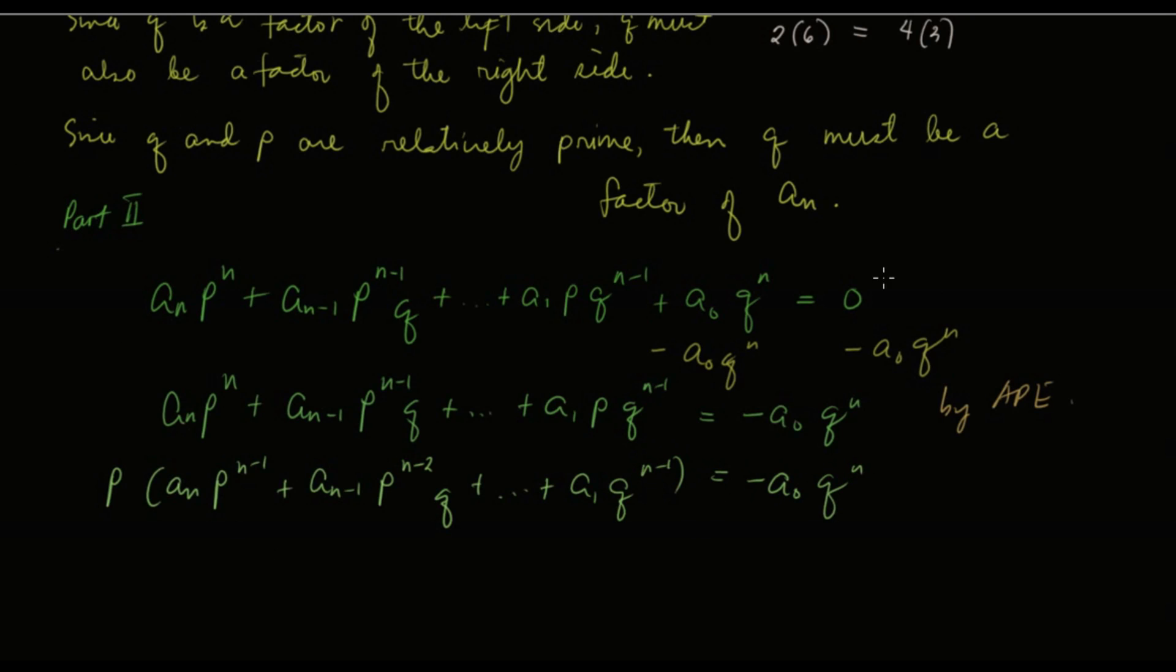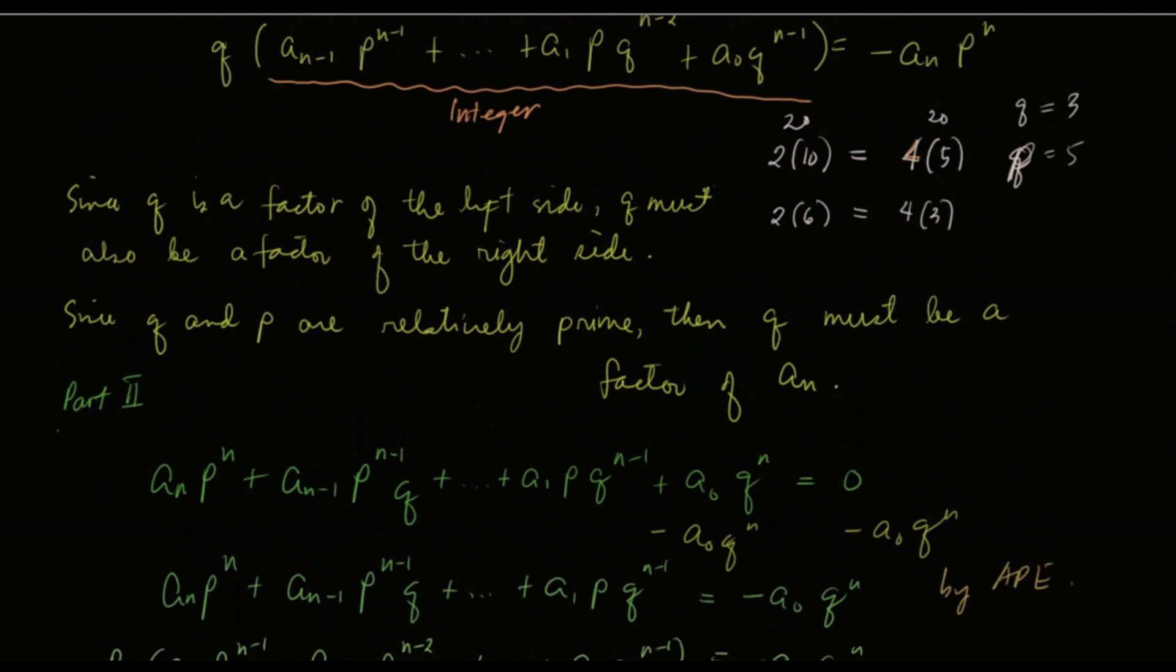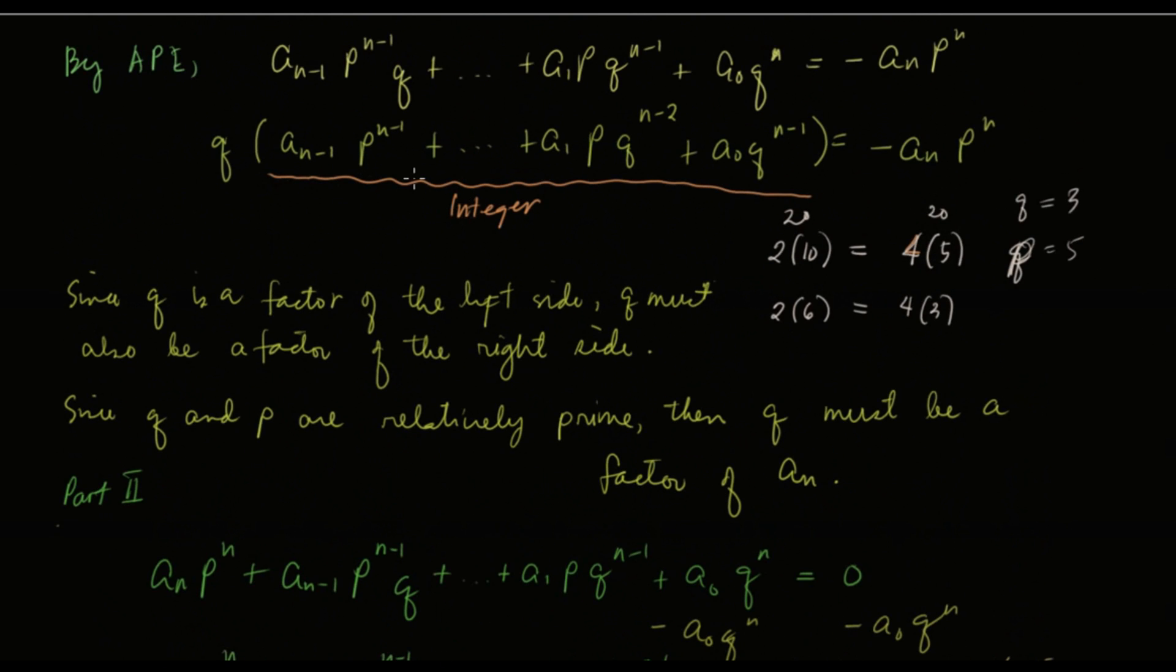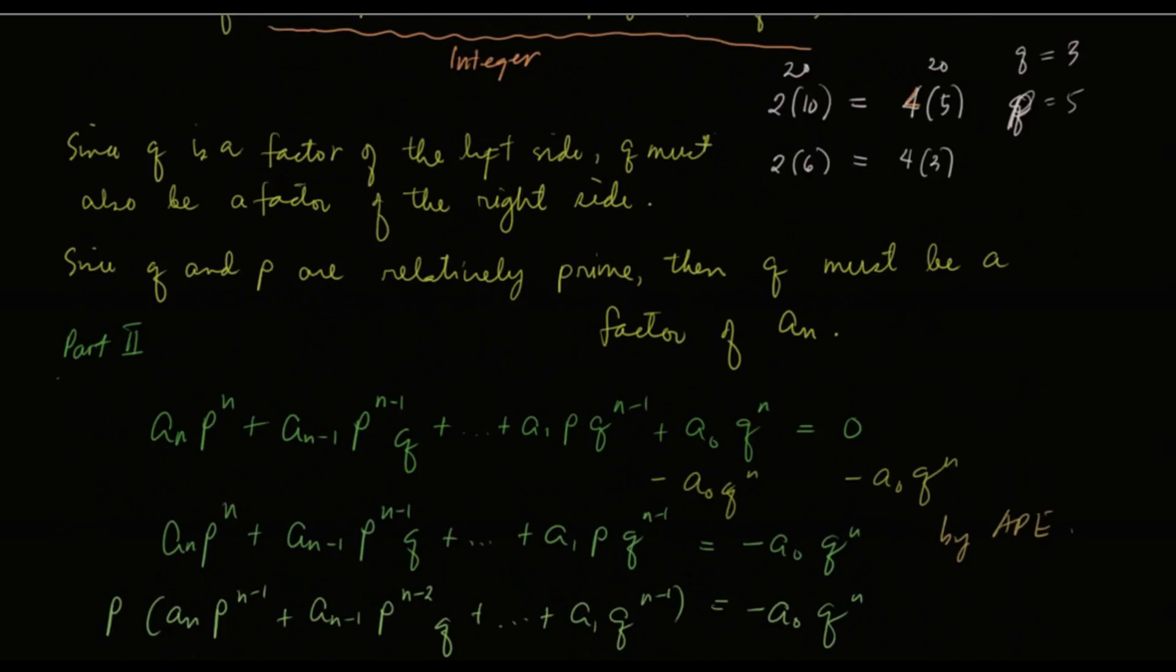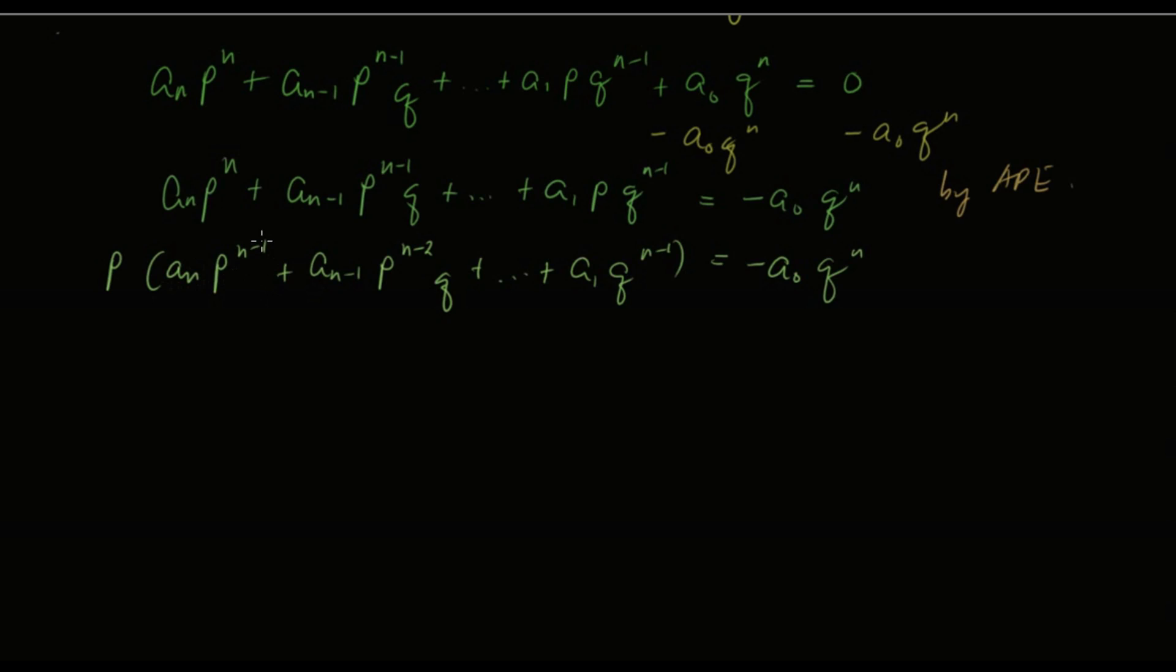We will use the same argument we used in the first proof. This is an integer, because this is an integer, this one is also an integer, raised to a number will also be an integer, a whole number, then everything is an integer. This is an integer.